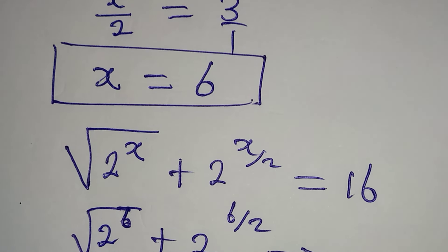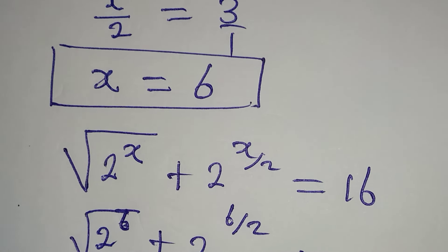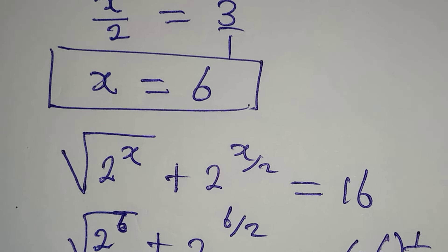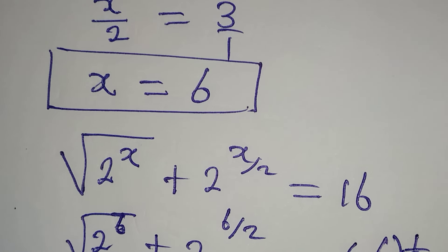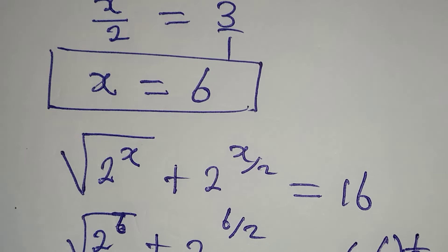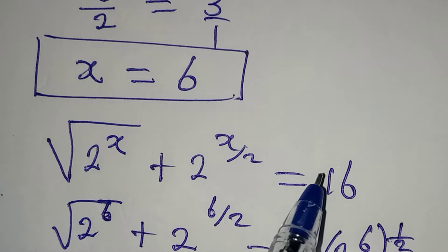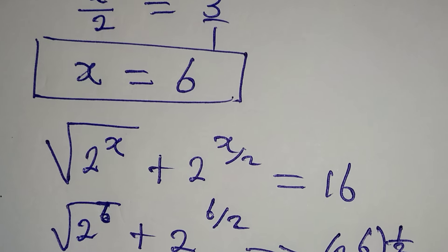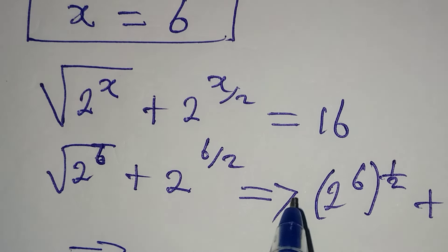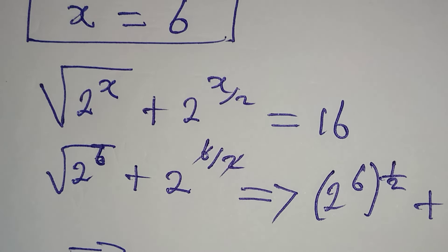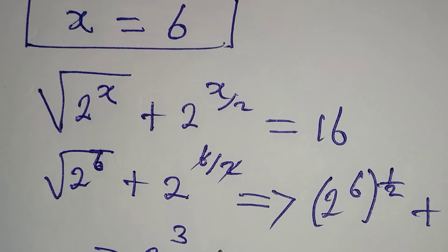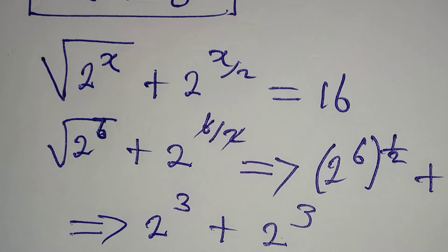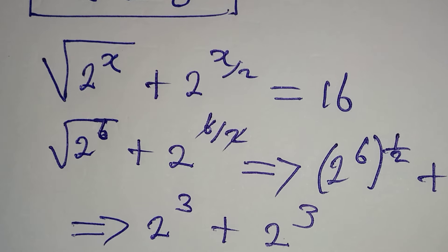This is the value of x we have according to the equation. But we can try this out to see if we are right or wrong. The original equation is square root of 2 to the power of x plus 2x over 2 being equal to 16. Now we have x to be 6, so we have square root of 2 to the power of 6, plus 2 to the power of 6 over 2. If we process this, are we going to have 16? Let's give it a try.